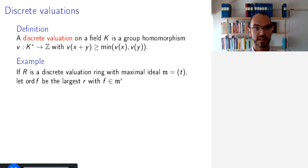So what is an example of this? Well, if R is a discrete valuation ring with maximal ideal M generated by one element T, then let's denote by ord_F the largest R such that F is contained in M to the power R. So F is an element of the ring R. Well, we can write F uniquely as alpha times T to the power R for a uniquely defined R, such that alpha is invertible in the ring R. And so this R is exactly the value.